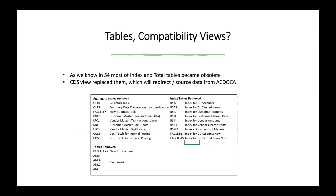Moving forward, coming to the tables and compatibility views. As we discussed, all the index tables and totals tables have become obsolete. We can see in the PPT screenshot that aggregate tables have been removed, index tables have been removed, totals tables, and some normal tables have also been removed. This is just a list of tables which we used daily in the ECC environment. You can get a complete list of tables by downloading the simplification list from S4HANA.